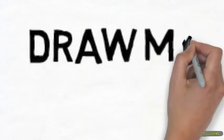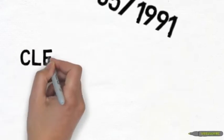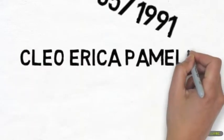This is a very brief draw my life or animate my life. On the 10th of May 1991, a Cornish baby girl was born by the name of Cleo Erica Pamelia Jane Cook.